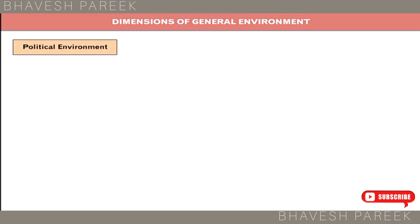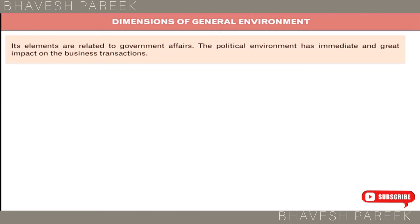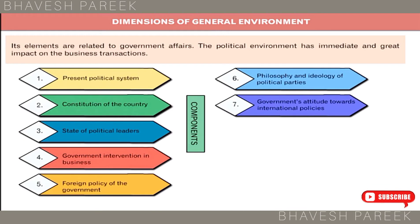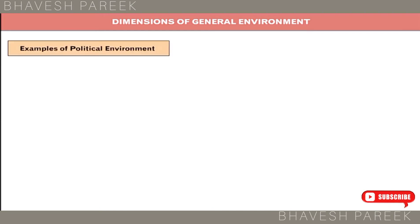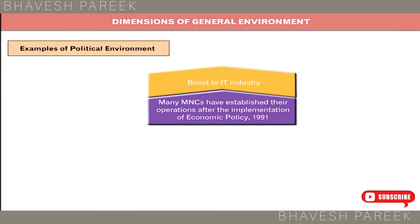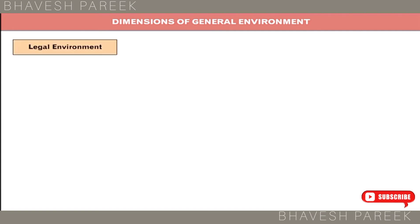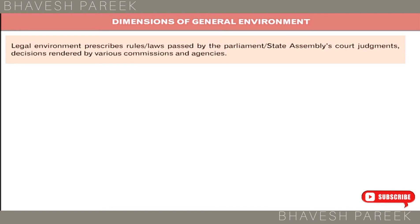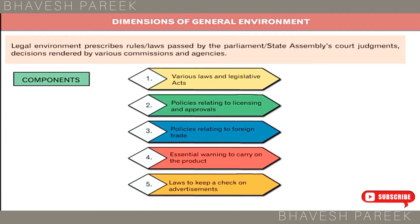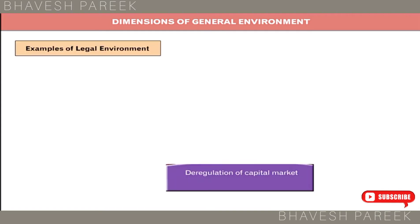Political Environment: Its elements are related to Government Affairs. The Political Environment has immediate and great impact on business transactions. Legal Environment prescribes rules and laws passed by the Parliament or State Assemblies, Court Judgments, and decisions rendered by various commissions and agencies.